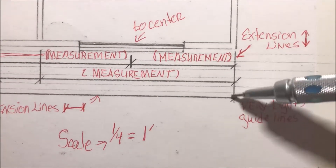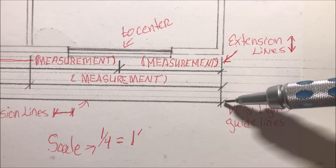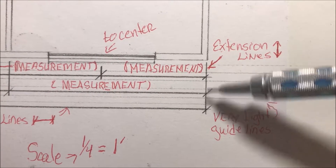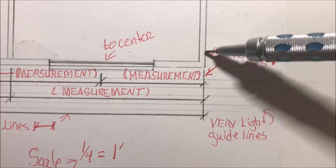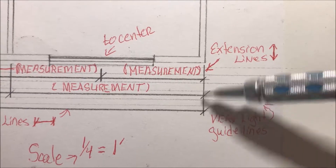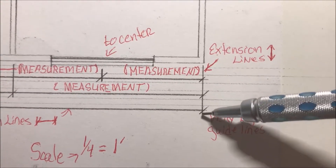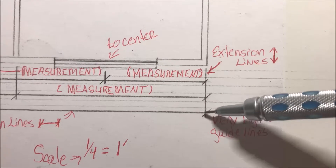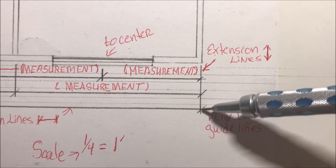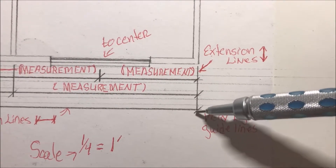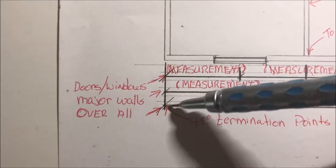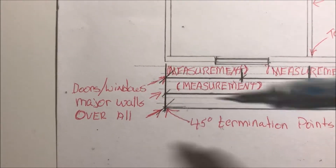Notice too that at the very ends I have termination points. This line comes all the way to the outer wall, and a termination point tells me that it's being measured to that point right there — with a little 45-degree slash through it. That is the point that I'm measuring to, and I'm measuring from over here.